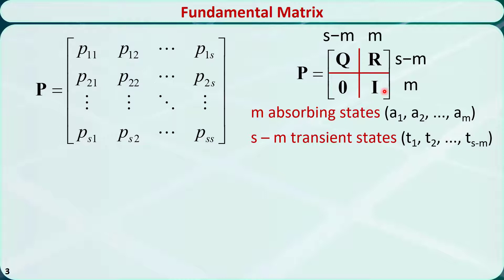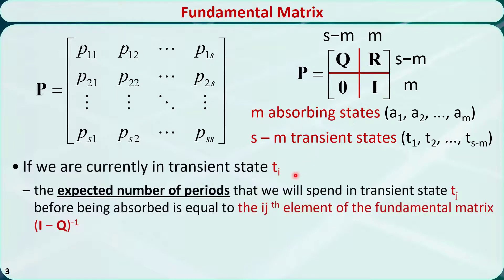If we are currently in transient state Ti, then the expected number of periods that we will spend in transient state Tj before being absorbed is equal to the ij's element of the inverse matrix of I-Q. This inverse matrix is called the fundamental matrix of the absorbing Markov chain.